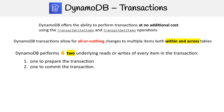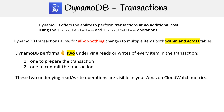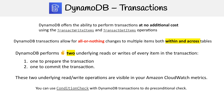There is a little bit of extra cost there, but it's negligible and shouldn't even be a concern. These two underlying read and write operations are visible in your Amazon CloudWatch metrics, so that's where you can keep track of them.